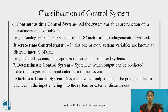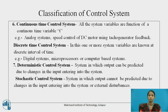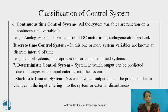Continuous time control system: all system variables are functions of a continuous time variable T. Discrete time control system: one or more system variables are known only at discrete time intervals — for example, digital systems, microprocessors, or computer-based systems. Deterministic control system: the output can be predicted due to changes in the input. Stochastic control system: the output cannot be predicted due to changes in the input or external disturbances.